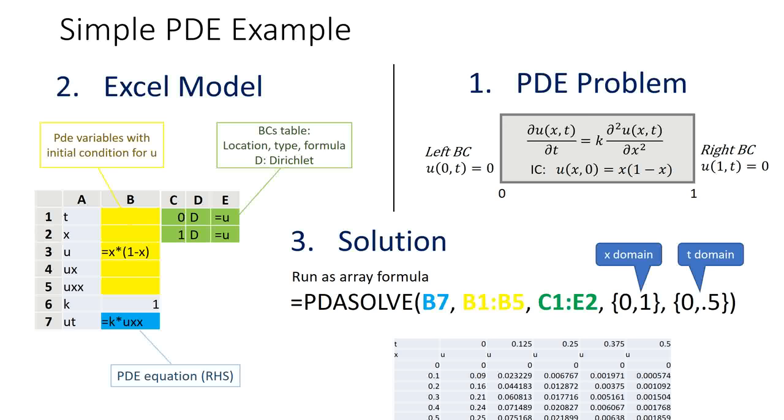The boundary conditions are defined in the green range C1 to E2. Each row defines the location, type and boundary condition formula which is always defined with respect to 0 on one side.